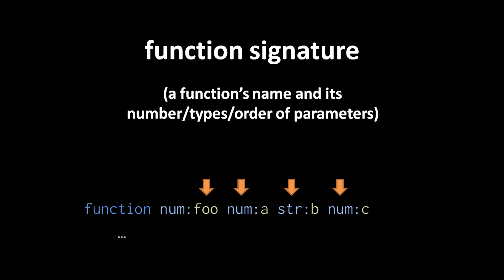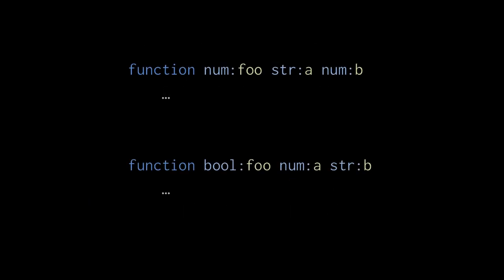Obviously, then, we can't have multiple functions with the same signature, because then the compiler interpreter wouldn't be able to distinguish between calls to those functions. Notice that we said a function's order of its parameter types is part of its signature. What this means is we can have functions with signatures that only differ by the order of their types. For instance, a function foo with a string parameter followed by a number parameter has a different signature than a function foo with a number parameter followed by a string parameter.